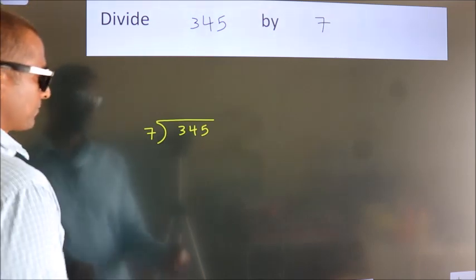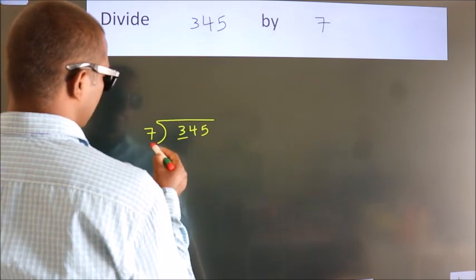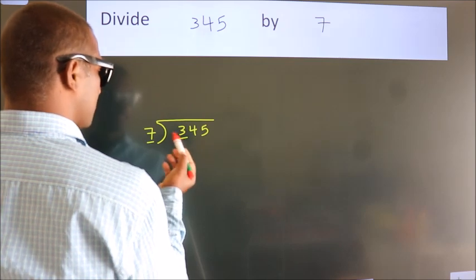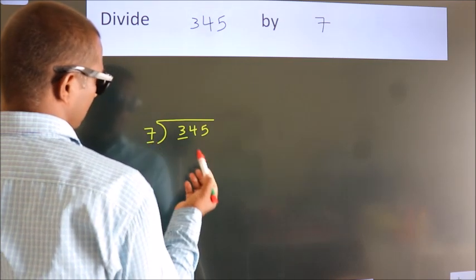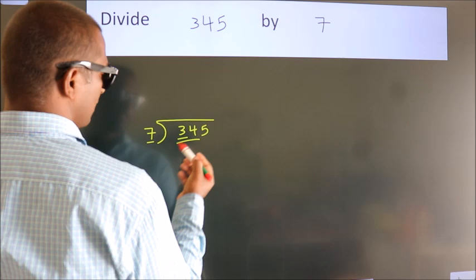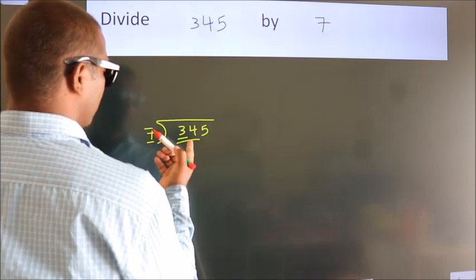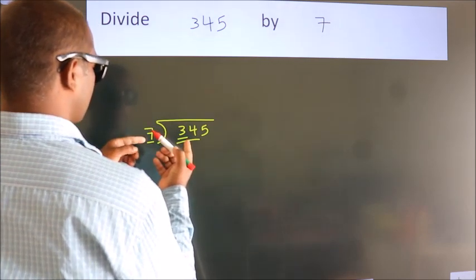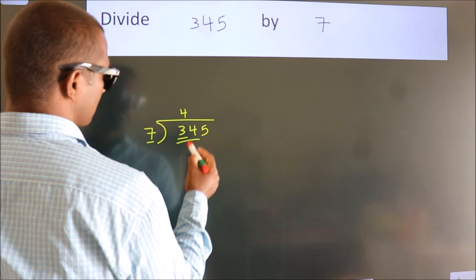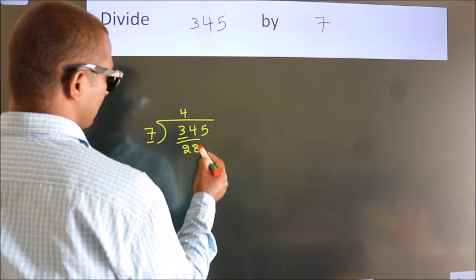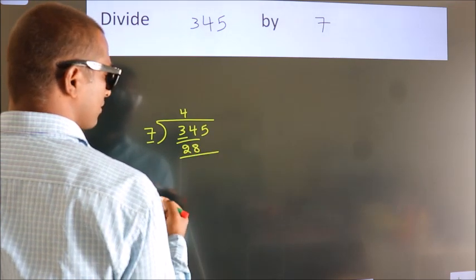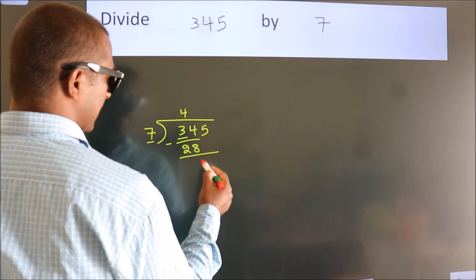Next, here we have 3, here 7. 3 is smaller than 7, so we should take two numbers: 34. A number close to 34 in the 7 table is 7 fours, 28. Now we should subtract. We get 6.